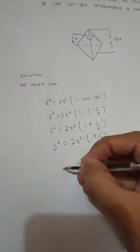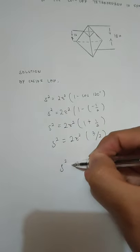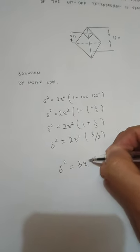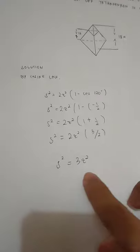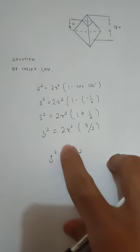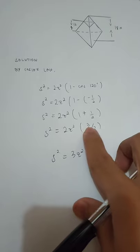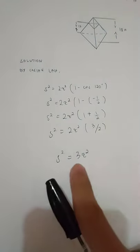We have S squared equals to 3Z squared. Kaya naging 3, 2 is because 2 times 3 over 2 is equals to 3.